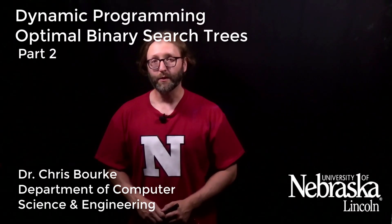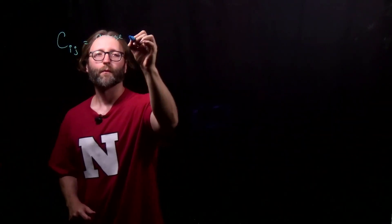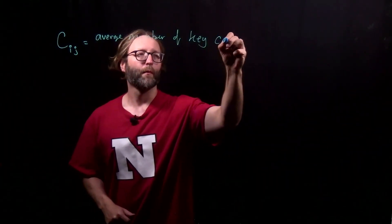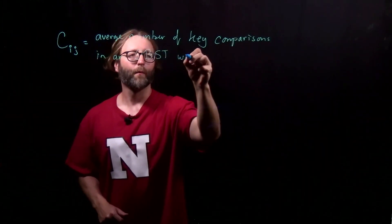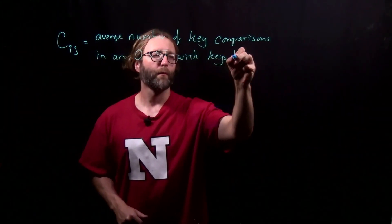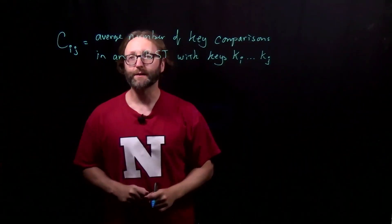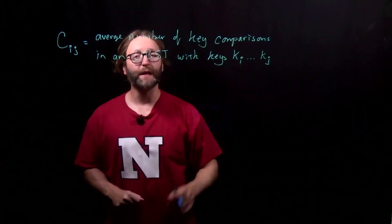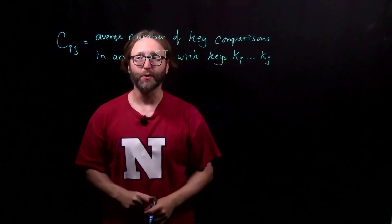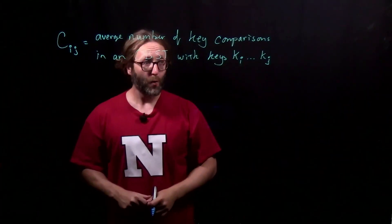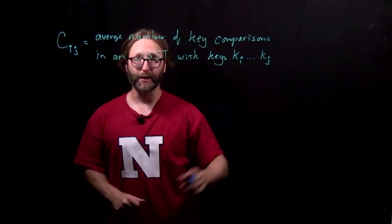Welcome back. Now we're going to derive a formal recurrence that captures the cost of an optimal binary search tree. We'll define c sub ij as the average number of key comparisons in an optimized binary search tree with keys ki through kj.